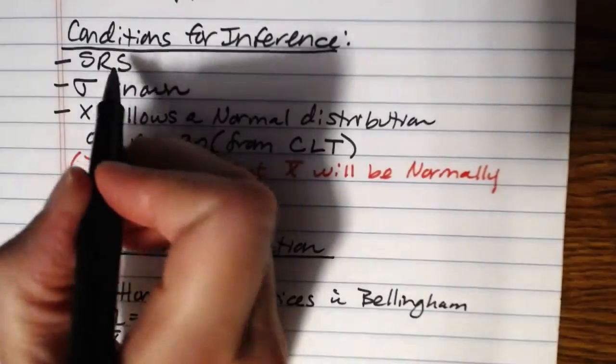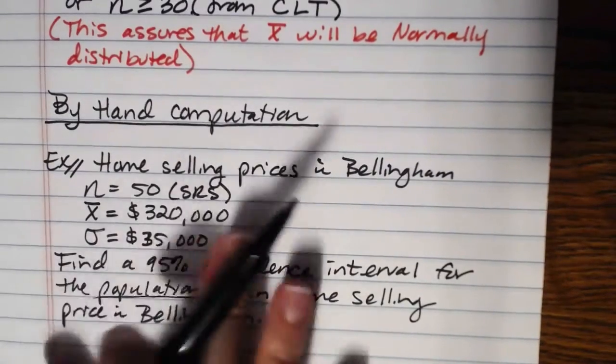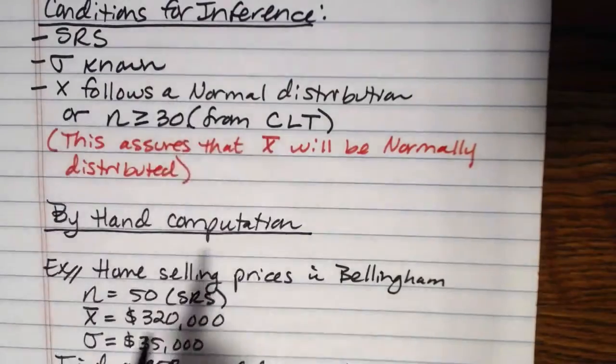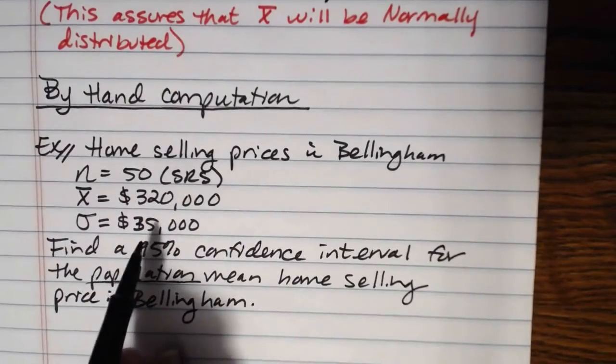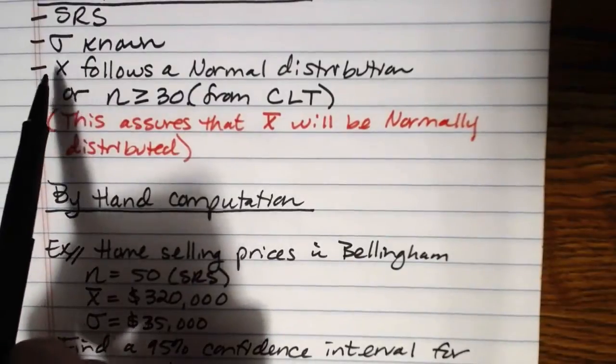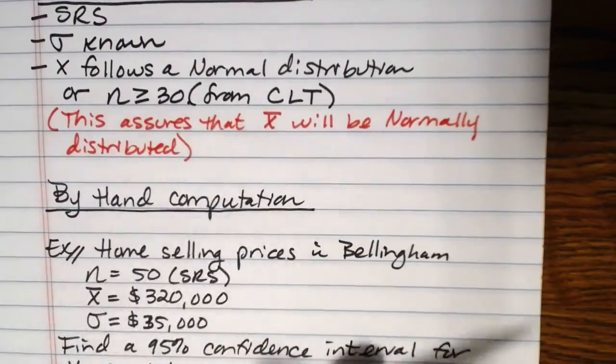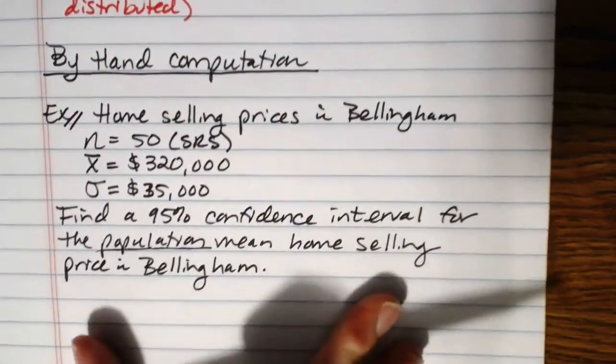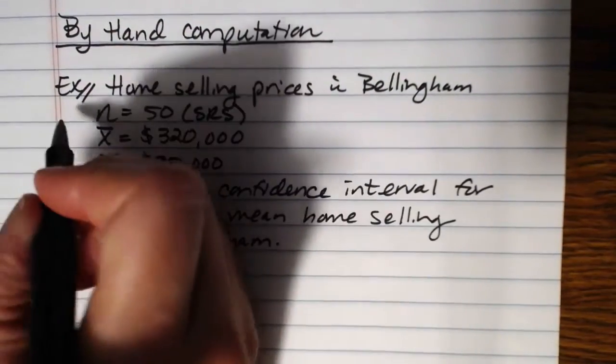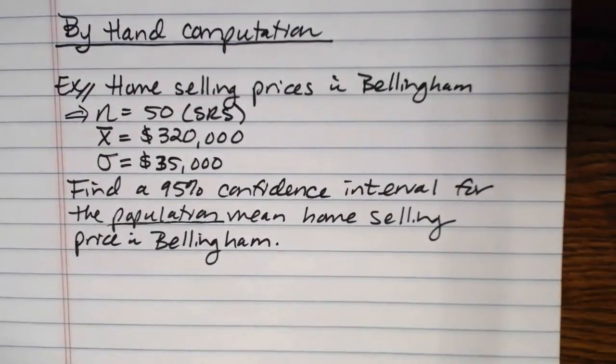So, I can check my conditions for inference first. Is it a simple random sample? Yes, I said it was. Sigma is known. Right? Here it is, $35,000. And I have to be told somewhere in the problem either that X follows a normal distribution, or I need a sample size of greater than or equal to 30. And in this case, I didn't have any information about X following a normal distribution, but my sample size is 50. So, I'm good to go. I meet all of the conditions for inference.